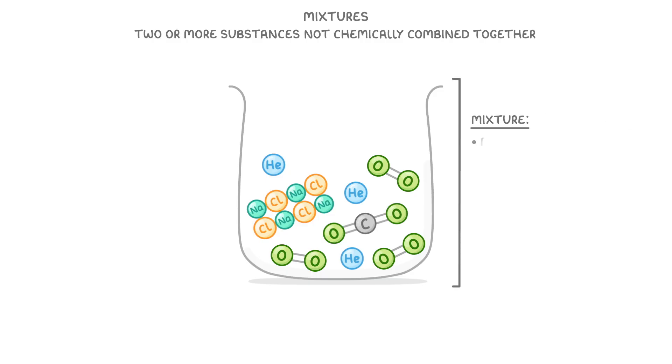Because it contains lots of different substances, but importantly, they haven't reacted with each other. So there's no chemical bonds between the individual substances. They've just been physically mixed together. And because of this, we can easily separate them using physical methods like filtration, crystallization, or distillation, which we cover in other videos.